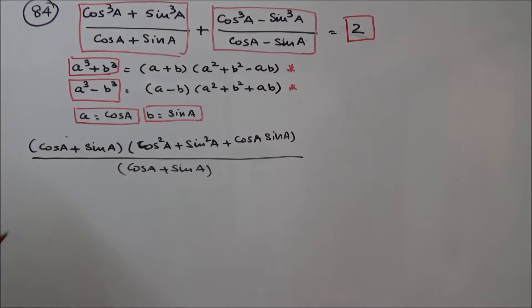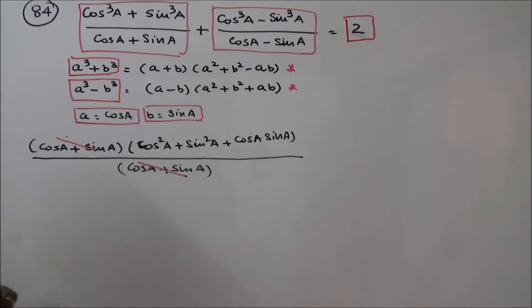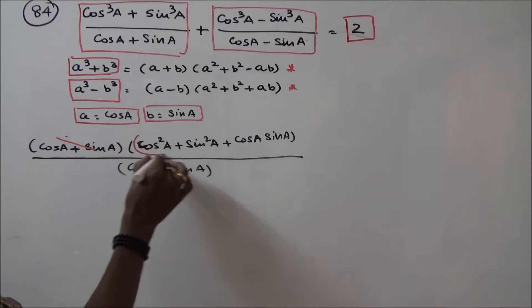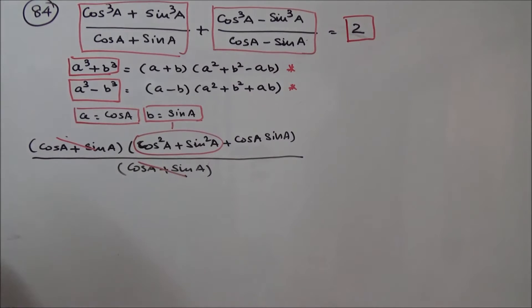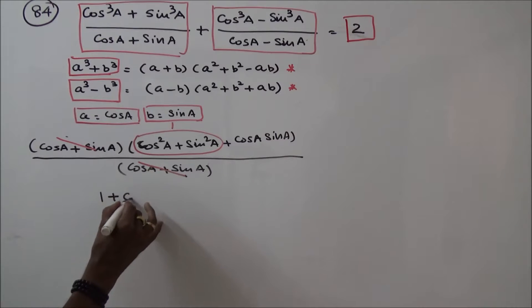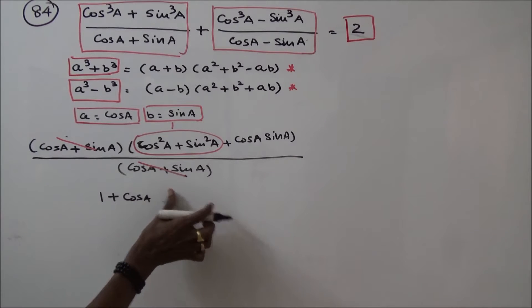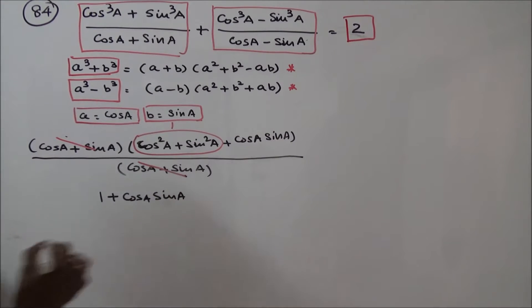The (cosA plus sinA) terms cancel. Since cos²A plus sin²A equals 1, the first part simplifies to 1 plus cosA·sinA.